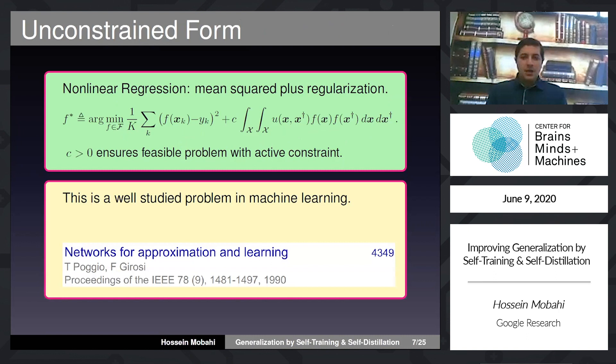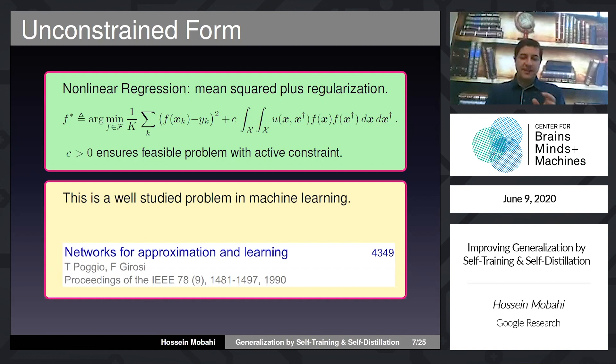Tommy has been a pioneer in this area from the machine learning perspective. He and Federico Giorosi published a series of interesting papers on problems of this sort in the nineties. Those are great references if anyone is interested to learn more — one of them has more than 4,000 citations.